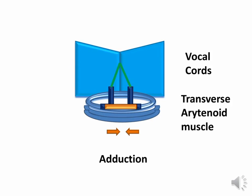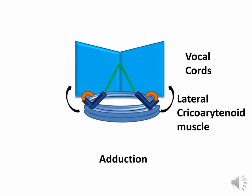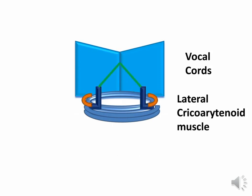The lateral cricoarytenoid muscle is attached to the anterior aspect of the muscular process of the arytenoid cartilage and the lateral aspect of the cricoid cartilage. During its contraction, it produces the adduction of the vocal cord, since the vocal process of the arytenoid cartilages are pulled posteromedially.